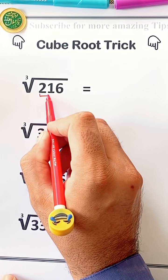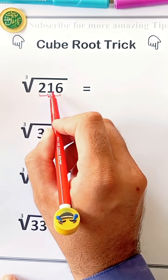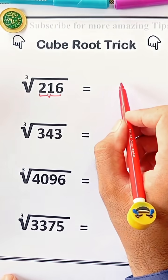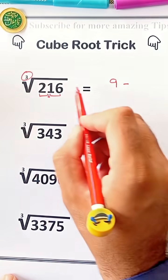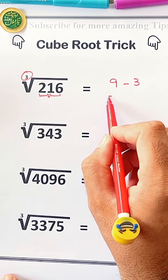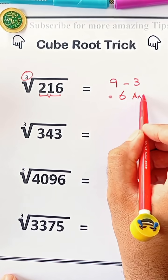Take the number inside the cube root, like 216. Add up the digits. 2 plus 1 plus 6 equals 9. Now subtract 3, because cube. 9 minus 3 equals 6. Boom!